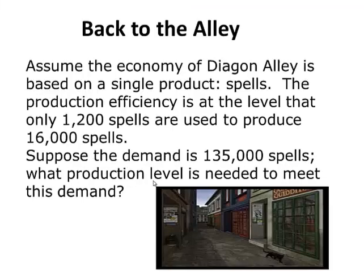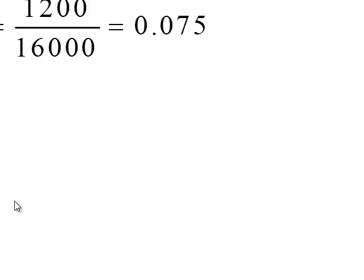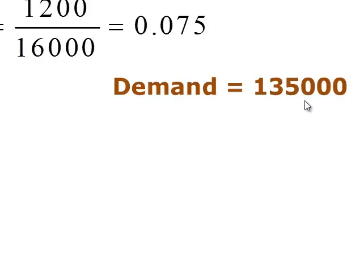This is the same problem I did in my previous video. So let's look at the information to solve this problem. What are we looking for? We're looking for production level — how many spells to produce. In this process, we're using up spells in order to produce spells, so nothing comes for free. We had an efficiency rate of 1,200 spells used up to produce 16,000 spells, which is a rate of 0.075. We also have a demand of 135,000 spells.